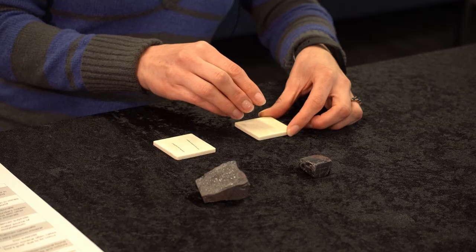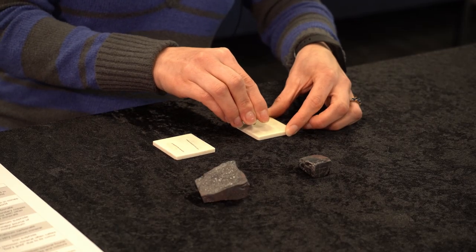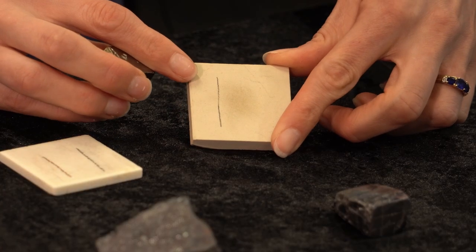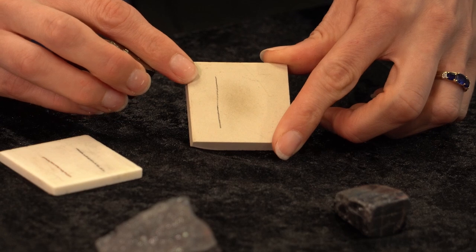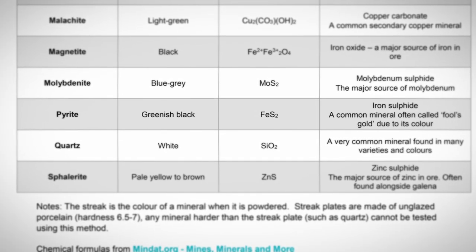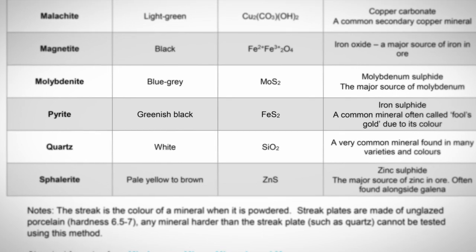I have this specimen which looks like gold, but we can use the streak test to determine if it's real gold or fool's gold. So I'll run my specimen across the streak plate and you can see it leaves behind a greenish black streak. If we refer back to our mineral streak identification chart, greenish black is indicative of pyrite or fool's gold.